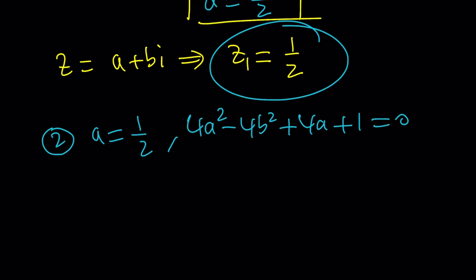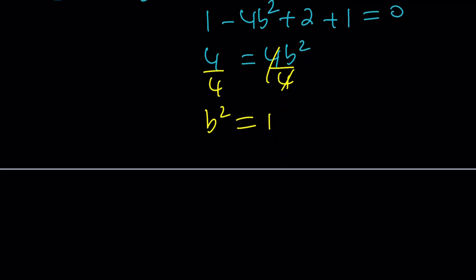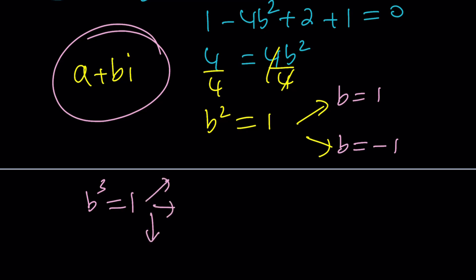When you plug in 1/2, this gives you 4 times 1/4, which is 1, minus 4b², plus 4 times 1/2, which is 2, plus 1 = 0. Now 1 + 1 + 2 is 4, that's awesome, so 4 = 4b². Let's divide both sides by 4, and that gives us b² = 1. You gotta remember that a and b are real numbers and i is imaginary. From here we get two values: b is 1 or -1. This is especially important when you get an equation like b³ = 1. With the cube root there are actually three cube roots of a complex number, but if b is real there is only one cube root.